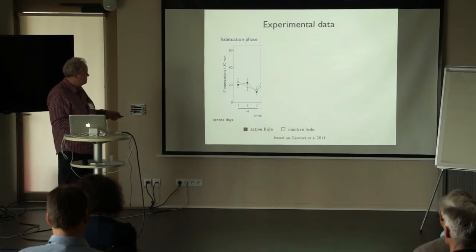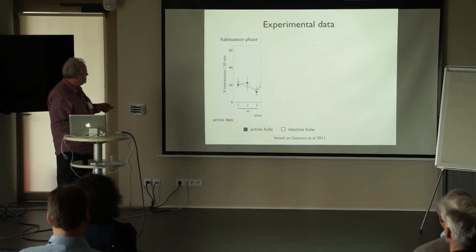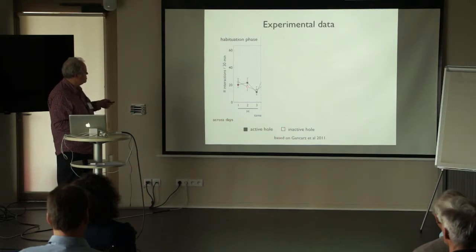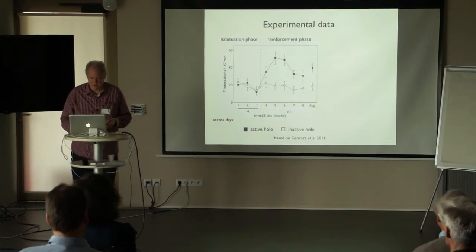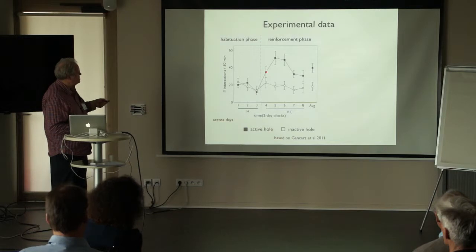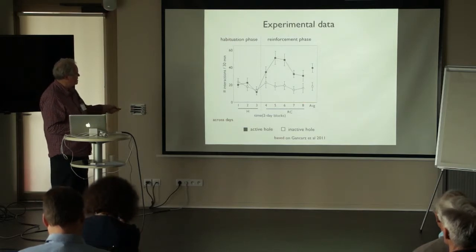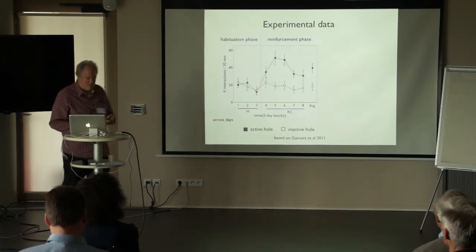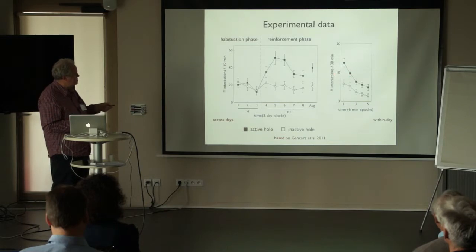Here's the experimental data from Gannett's lab. During the habituation phase, the number of interactions in a 30-minute period for the active hole and inactive hole — shown by dark squares and open squares respectively — is roughly comparable, with moderate habituation over the three-day period. But as soon as you turn on the active phase of the experiment, the number of responses into the active hole — the one that elicits the light — increases, then declines somewhat as the experiment progresses over 16 days. You get this characteristic elevation of response into the active hole, and there is the response during a single day broken down into six-minute epochs, showing some habituation within the day as well.